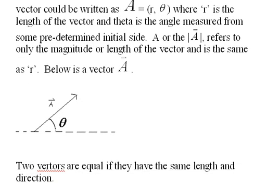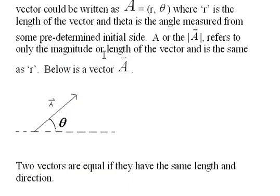There is the arrow, right? It's arrow. You notice it has a length, a certain amount of length, and then it has a direction from an initial side, a predetermined initial side. Two vectors are equal if they have the same length and direction.